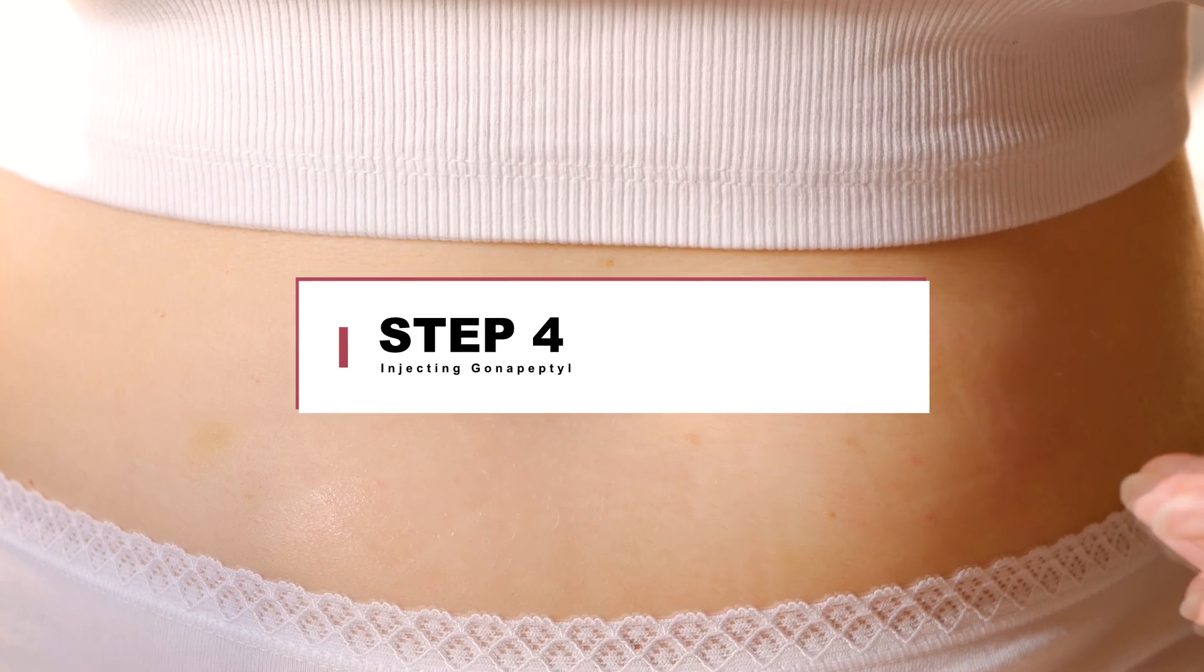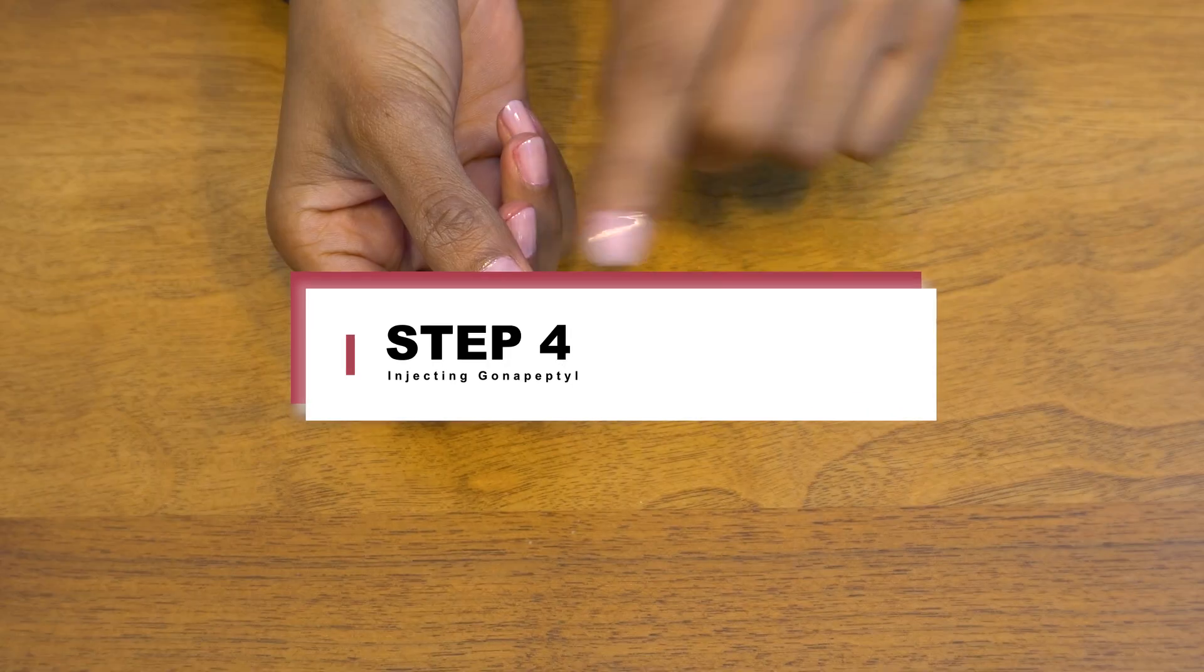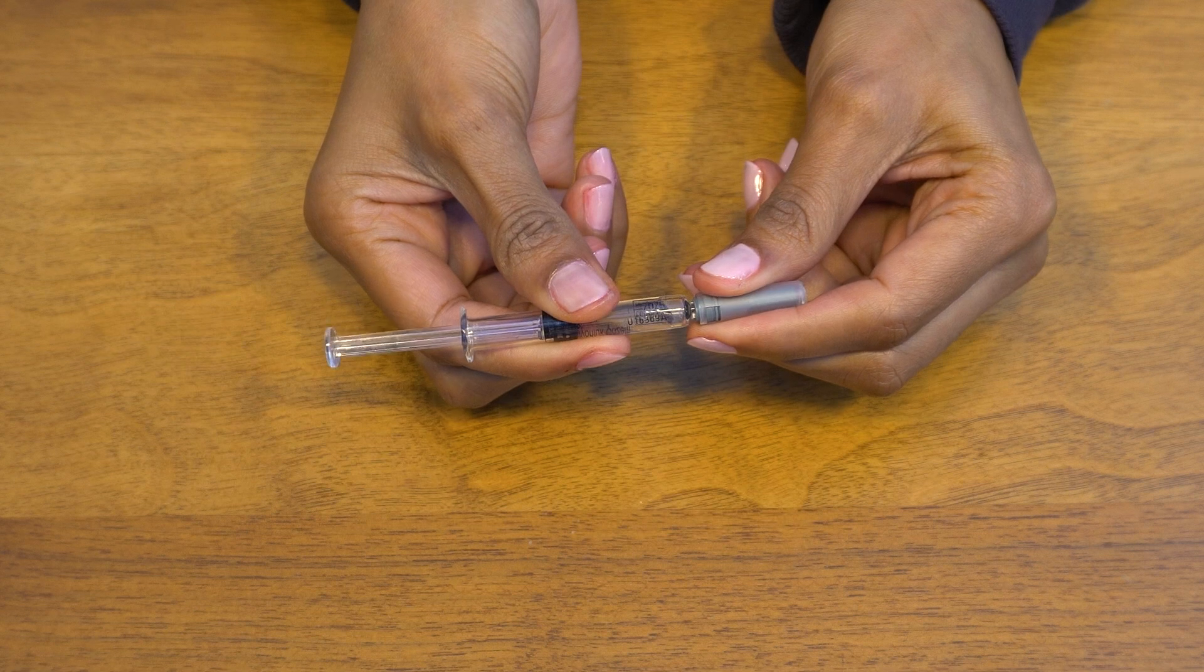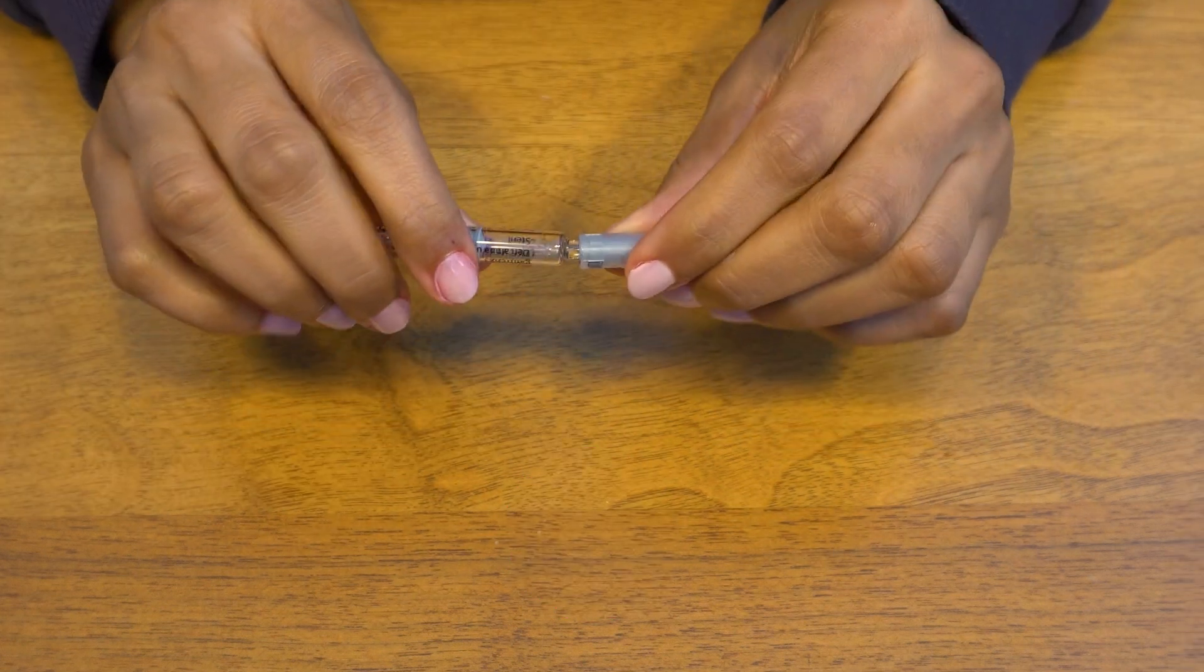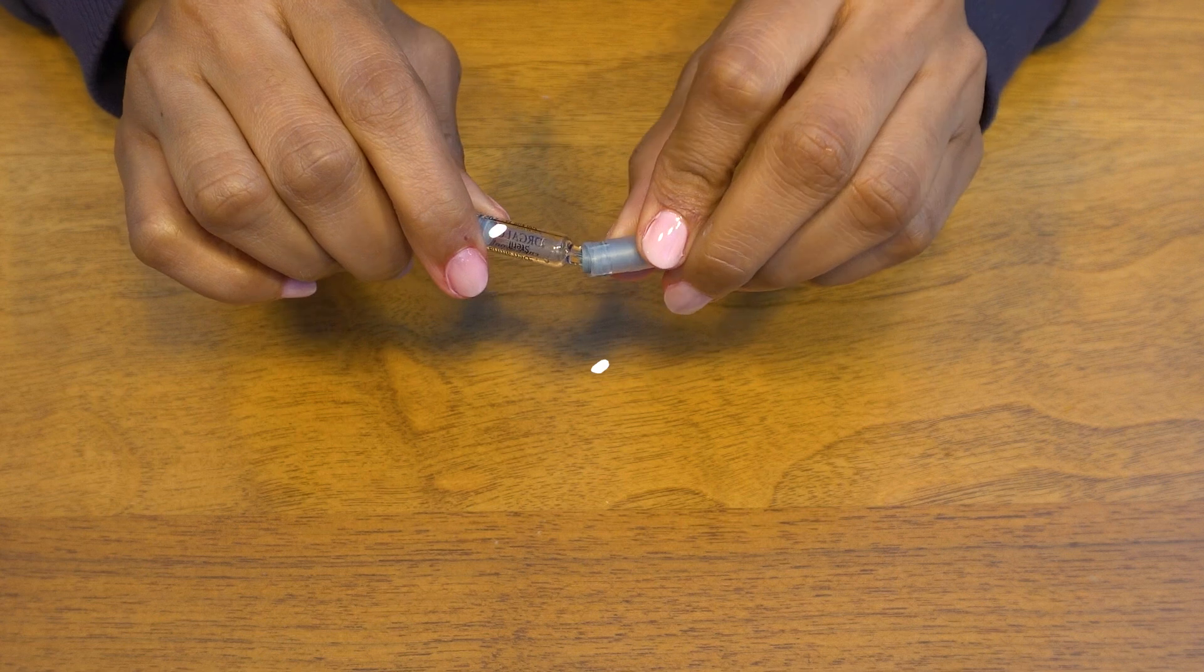Step 4: Injecting gonapeptal. Remove the needle cap from the pre-filled syringe without touching the needle. Don't bend the needle. Otherwise, you may break it.